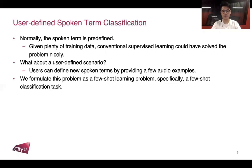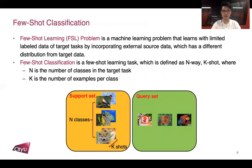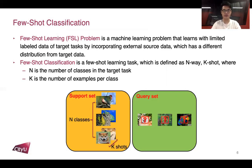Next, I will introduce two concepts: a few-shot learning problem and few-shot classification. A few-shot learning problem is a machine learning problem that learns with limited labeled data of target tasks by incorporating external source data, which has a different distribution from target data. Few-shot classification is a few-shot learning task defined as n-way k-shot, as this figure shows. In each task, there is a support set and a query set. In the support set, there are n classes of labeled examples, and in each class there are k examples. We need to learn a model using the support set and evaluate it on the query set.